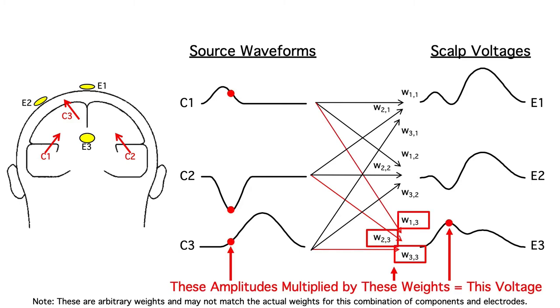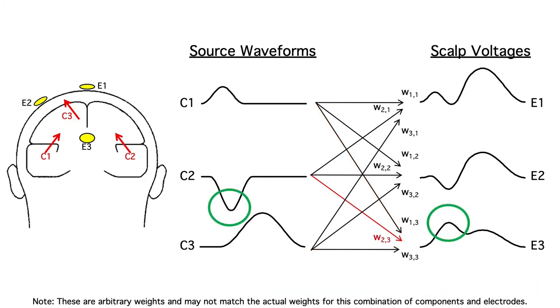The contribution of a given source to a given electrode site at a given time is simply the amplitude of the source waveform at that time multiplied by the weight between that component and the electrode site. Some of the weights may be negative,